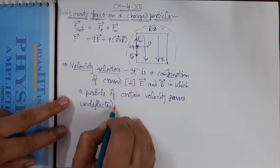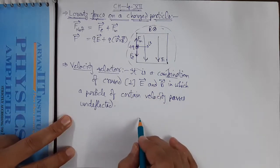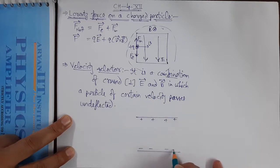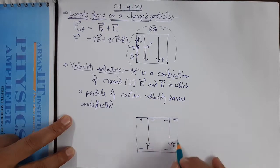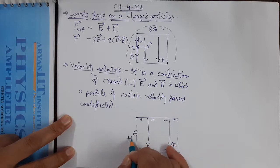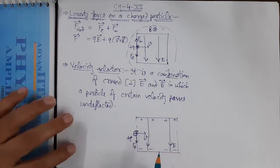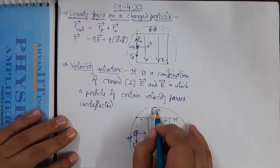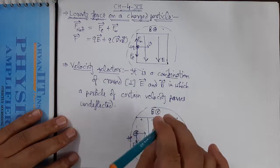To understand this, consider a parallel plate capacitor: the upper plate is positively charged and the lower plate is negatively charged, so the electric field points from positive to negative (downward) in this region. In the same region, we also maintain a uniform perpendicular magnetic field B directed into the plane of the paper (cross direction).